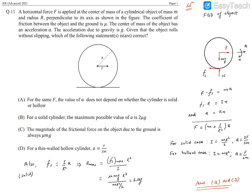Option C reads: the magnitude of frictional force on the object due to ground is always μmg. I just explained static friction is self-adjusting and takes values depending on force F.